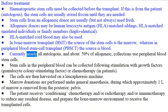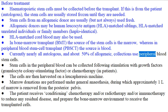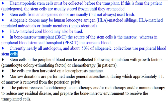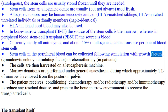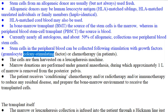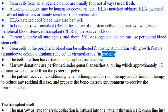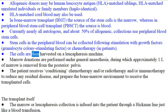Currently nearly all autologous and about 50% of allogeneic collections use peripheral blood stem cells. Stem cells in the peripheral blood can be collected following stimulation with growth factors — granulocyte colony stimulating factor — or chemotherapy in patients. The cells are then harvested on a leukapheresis machine.